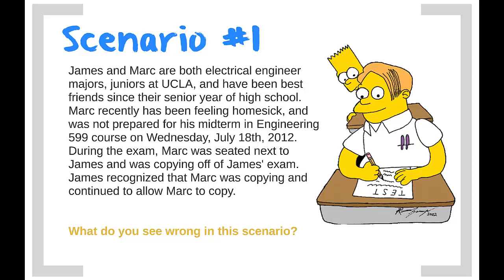James and Mark are both electrical engineering majors, juniors at UCLA, and have been best friends since their senior year of high school. Mark recently had been feeling homesick and was not prepared for his midterm exam in Engineering 599 on Wednesday, July 18, 2012. During the exam, Mark was seated next to James and was copying off of James' exam. James recognized that Mark was copying and continued to allow Mark to copy. What do you see wrong in this scenario?